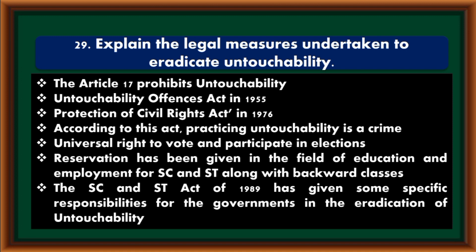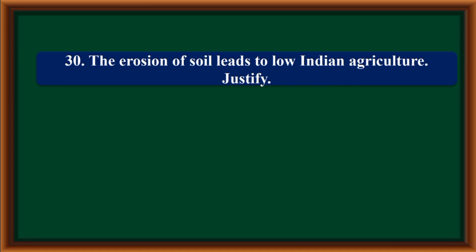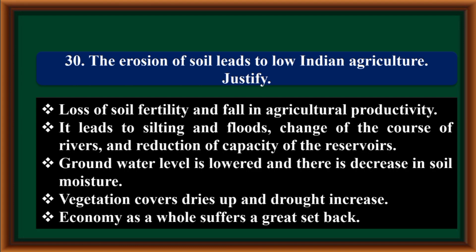The erosion of soil leads to low Indian agriculture — justify. Loss of soil fertility leads to a fall in agricultural productivity. It leads to silting and floods, and changes in the course of rivers, reducing reservoir capacity. Ground water level is lowered and there is a decrease in soil moisture. Vegetation cover dries up, drought increases, and the economy suffers a great setback.